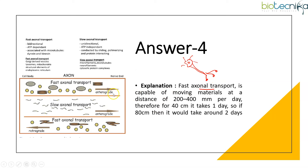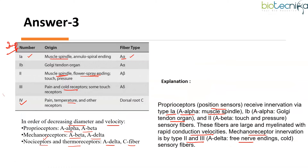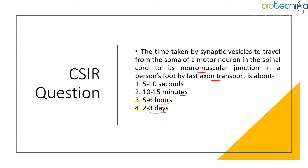Fast axonal transport moves materials at around 200–400 mm per day. Converting, that is about 40 cm per day in one direction. Since it moves in two directions, you calculate around 80 cm total. At this rate, it would take around two days to travel from the spinal cord to the foot. So the correct answer is option 4: two to three days.